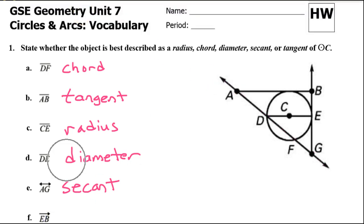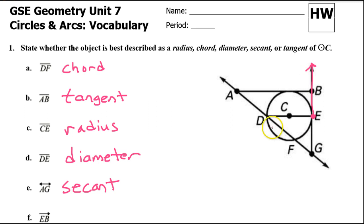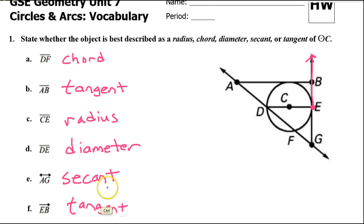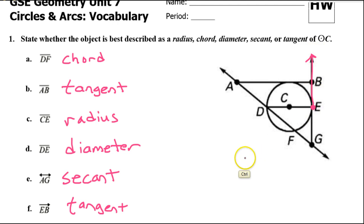What about ray EB? Ray EB starts at E and passes through B. That's ray EB. This is also going to be another tangent. A tangent could be a line, a segment, or a ray — it's touching only at one point. That makes it a tangent.